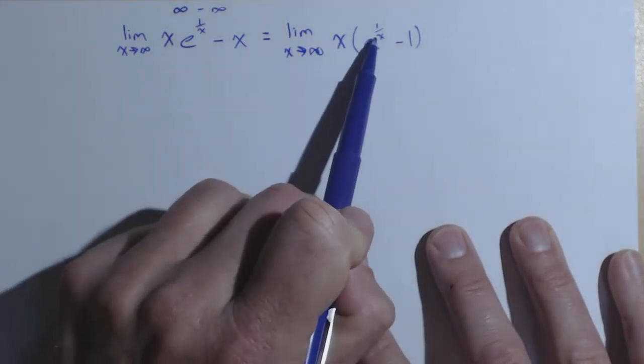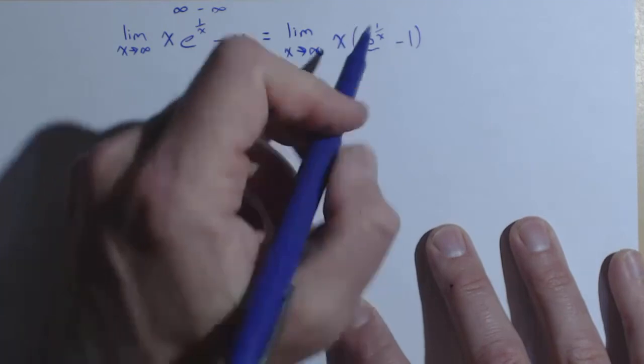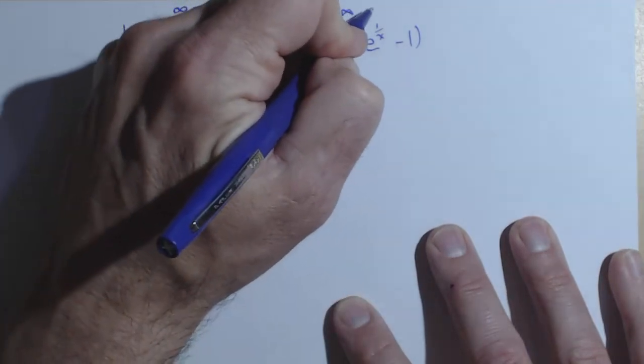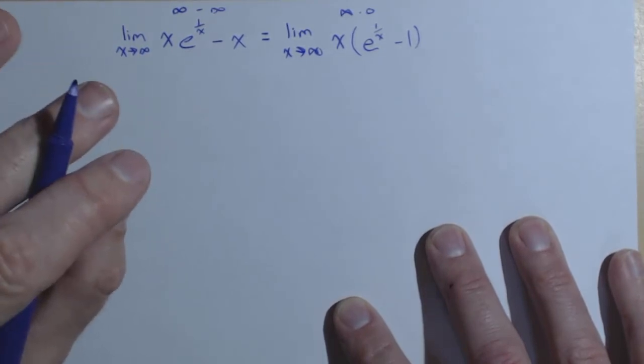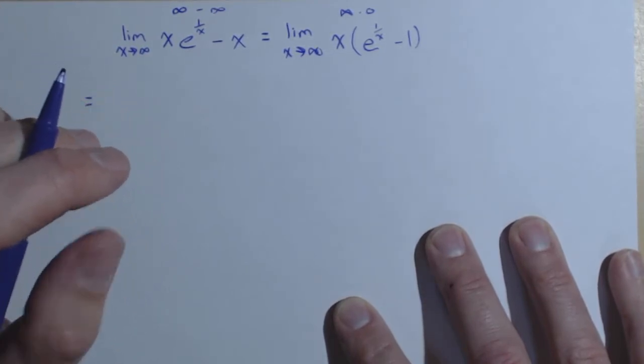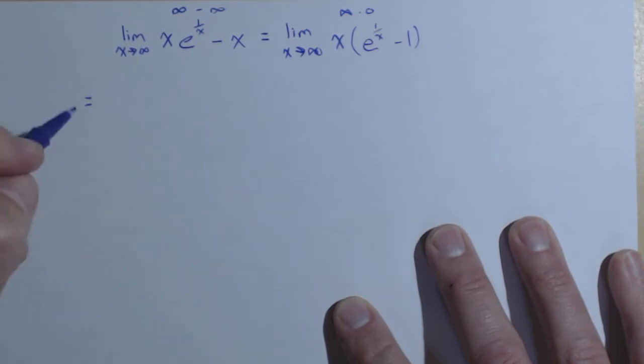Now we have an infinity, now this we said goes to one, one minus one is zero, so we have an infinity times zero case, so it still falls under our L'Hopital's umbrella, but it's not in a form where we can apply L'Hopital's rule, it either must be zero over zero or infinity over infinity.